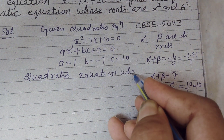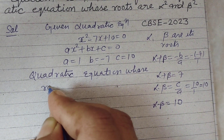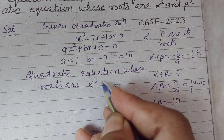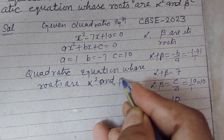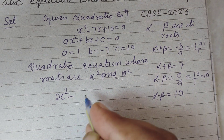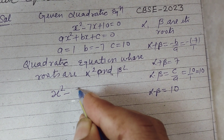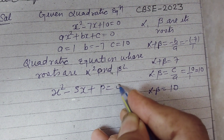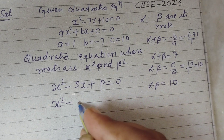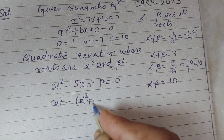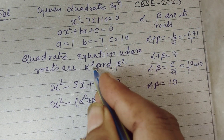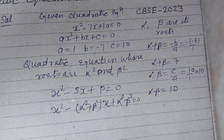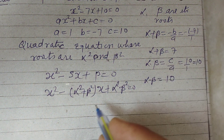The quadratic equation whose roots are alpha squared and beta squared is: x squared minus (sum of roots)x plus (product of roots) equals 0. That is x squared minus (alpha squared plus beta squared)x plus (alpha squared into beta squared) equals 0.